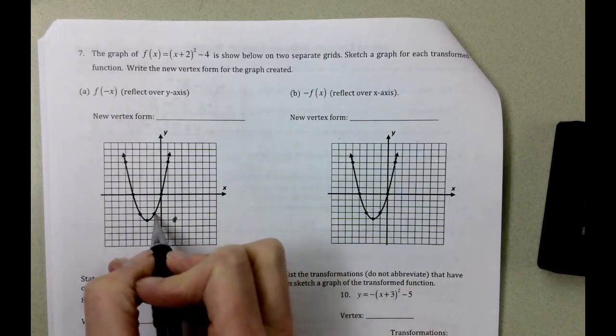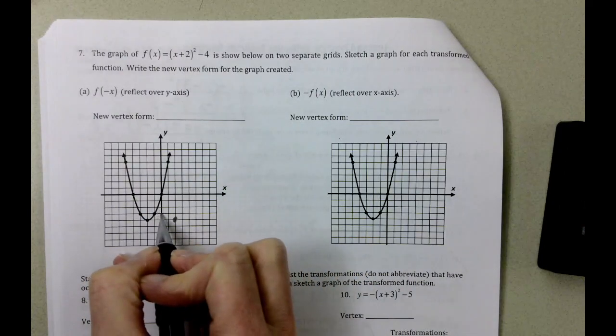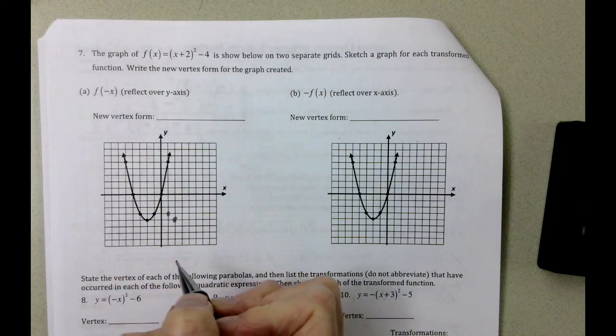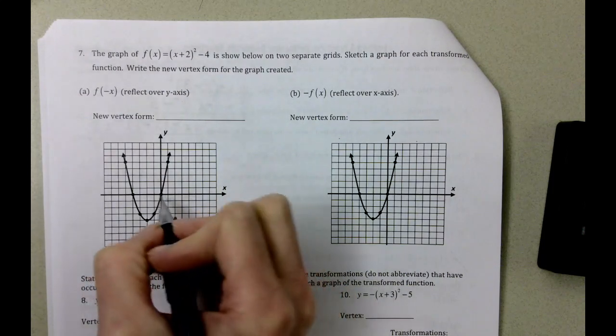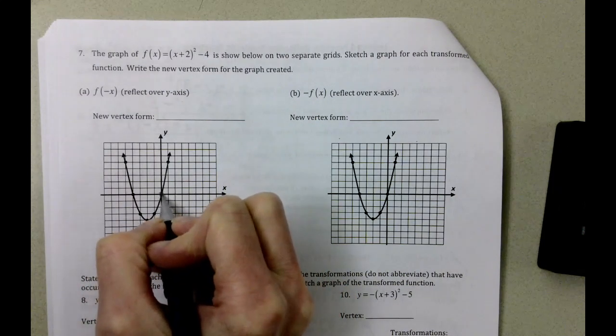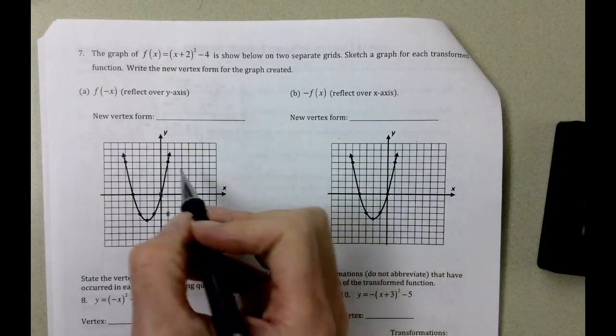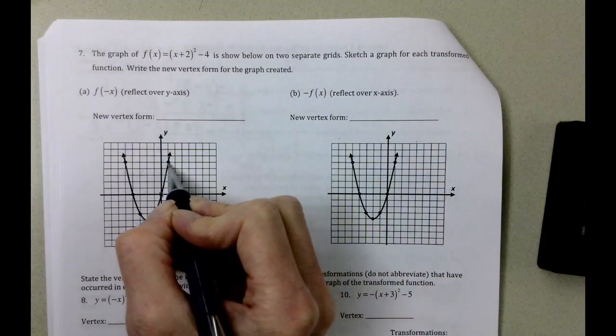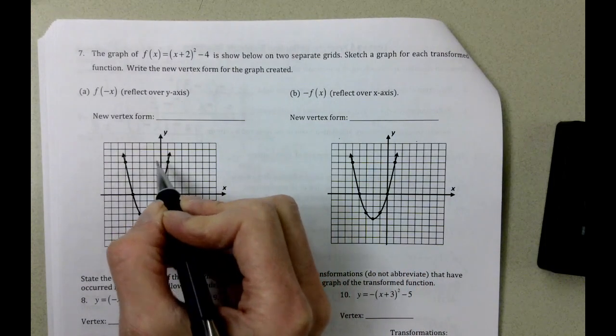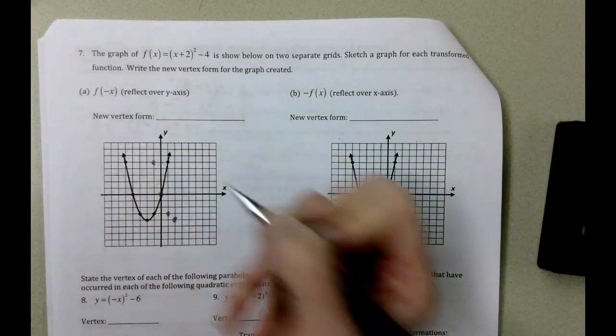And then this point is one space away from the y-axis, so this one is one space away from the y-axis. This point is on the y-axis, so we're going to keep that point. And this is one space away from the y-axis, so one space away.